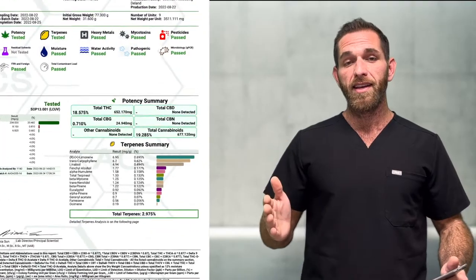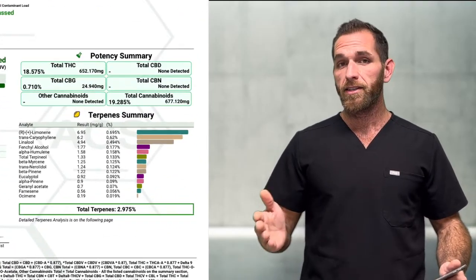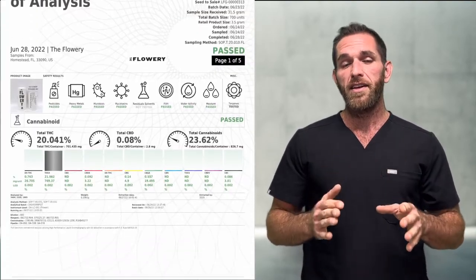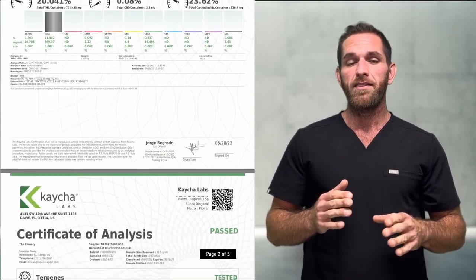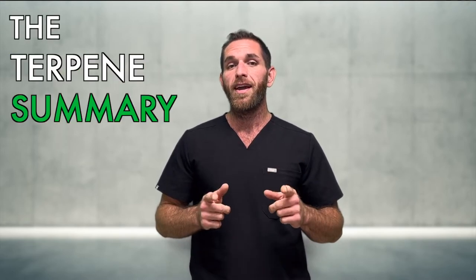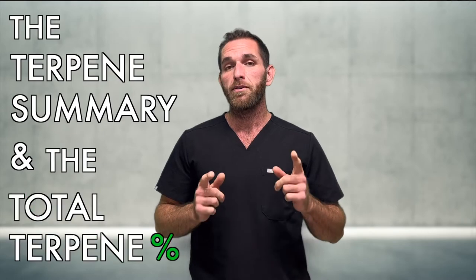On the ACS Lab COAs, the potency summary will be at the bottom right. On the Kecha COA, you can find these on the first and second pages. The cannabinoid percentages are found here, but these matter less as we'll see in a second. What we really care about is the terpene summary and the total terpene percentage.